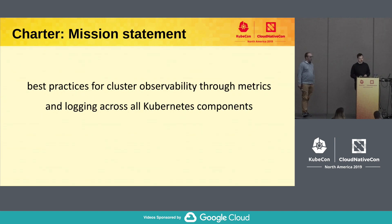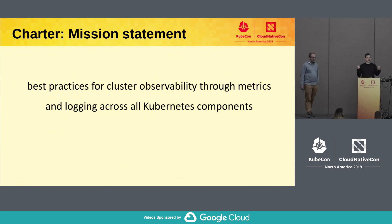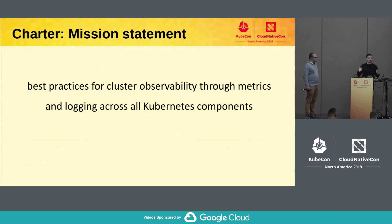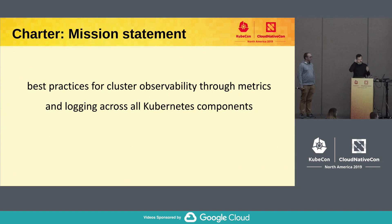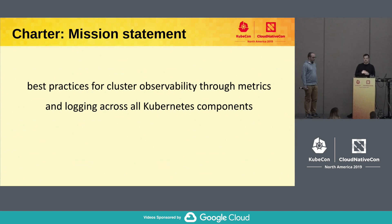Every Special Interest Group within Kubernetes has a mission statement. When you look at the SIG charter, each SIG has a written document defining their mission, what work is in scope, and what's out of scope. Our mission is: we define best practices for cluster observability through metrics and logging across all components within Kubernetes. When we say all of Kubernetes, we roughly mean the Kubernetes project on GitHub, though we also influence other projects through shared libraries.